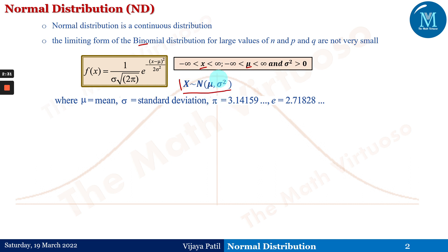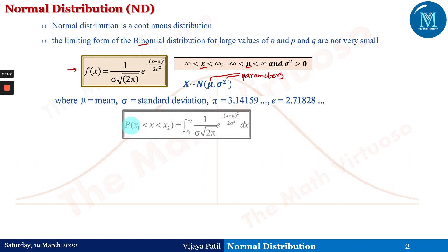In the normal distribution, μ and σ² are known as the parameters of the distribution. Unless we know μ and σ², we cannot write down the distribution or evaluate different questions. The probability that x lies between x₁ and x₂ is written as the integral from x₁ to x₂ of f(x) dx, which gives the probability that a point lies between x₁ and x₂.